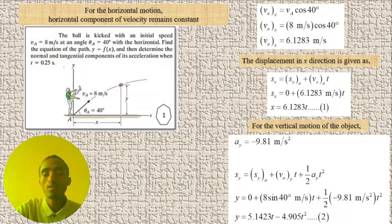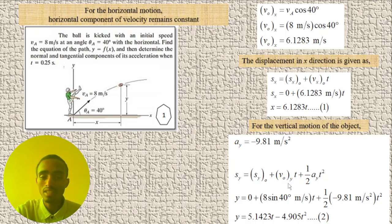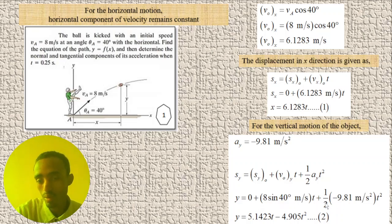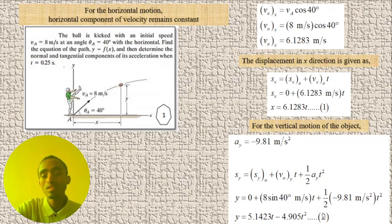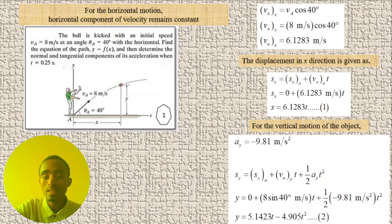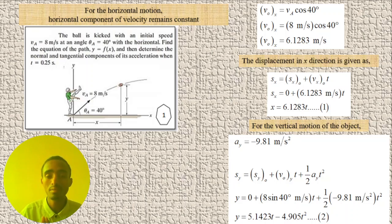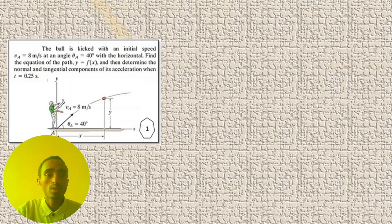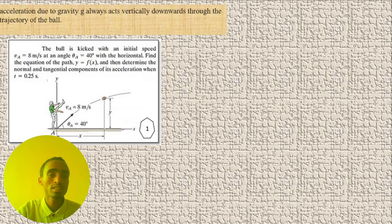Substituting the values: the initial position is zero, v₀y = v₀ sinθ = 8 sin40° meters per second times t, plus (1/2) times negative 9.81 m/s² times t². After simplifying, the vertical displacement is: y = 5.1423t − 4.905t².